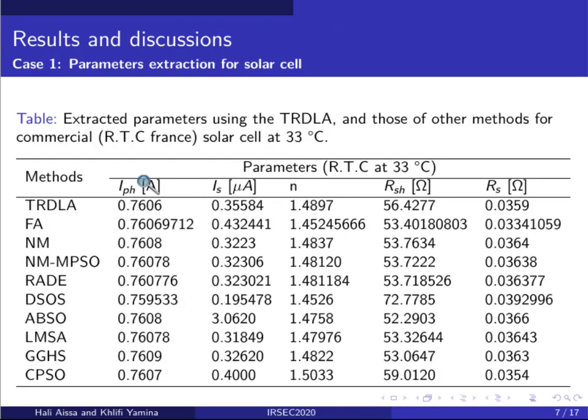The proposed technique based on the Trust Region Dogleg algorithm is applied to an RTC France silicon solar cell. The extracted parameter values are presented in this table and compared with those from recent works for the same solar cell.